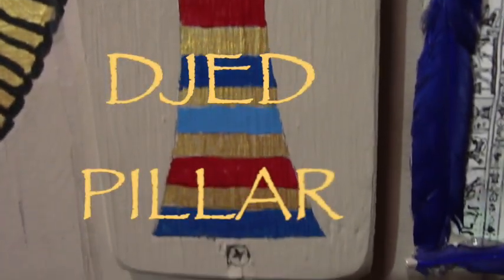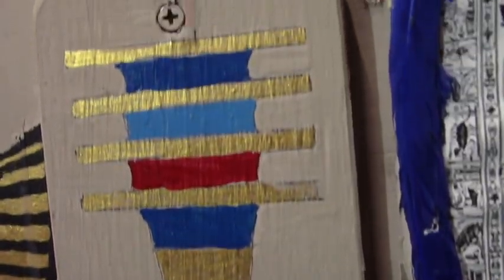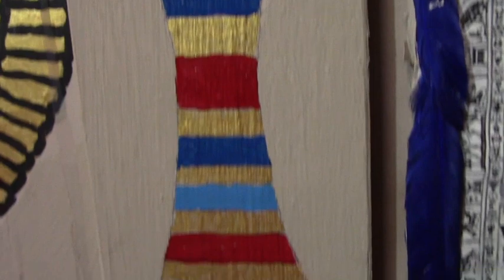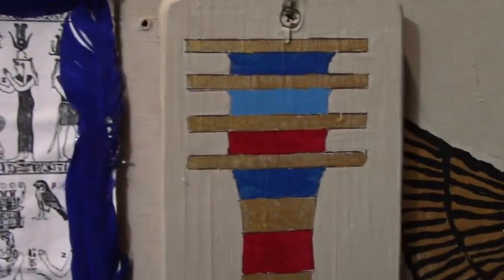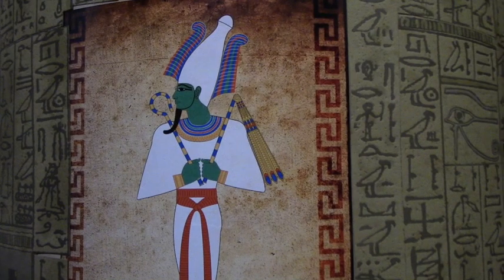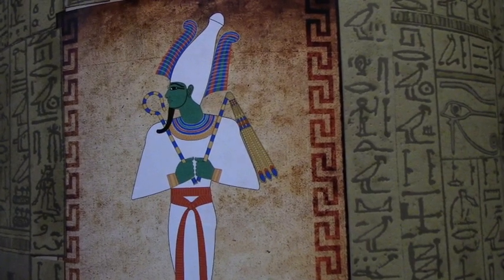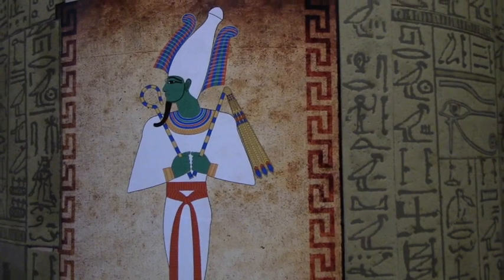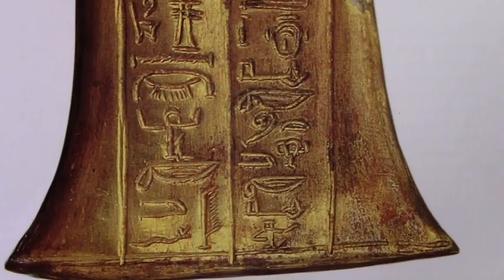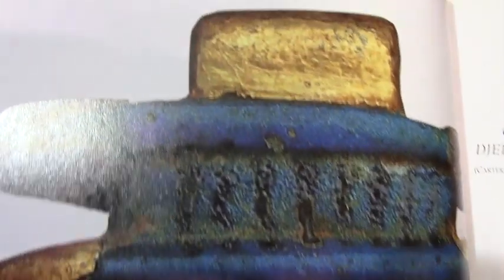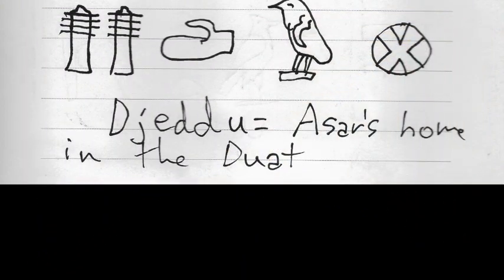The Jed Pillar looks a bit like a rook in a game of chess, but with little lines sticking out of it. It is the backbone of Osiris. It comes from a fable of Osiris being tricked by his evil brother Seth to get into a coffin, where he is trapped and floats down the Nile and lands on the shore of a foreign land. He grows inside of a tree there, and Isis has to come find him inside this tree — and that tree is the Jed Pillar. So Jed Dou is Osiris's home in the afterlife, in the duat.